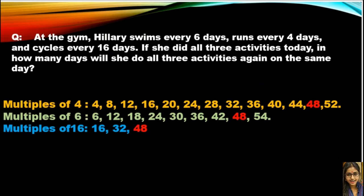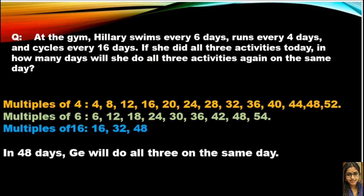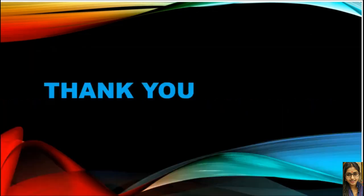Here we got one common multiple that is 48 in all three: 4, 6, and 16. Children, we can say that in 48 days she will do all three activities on the same day. I think children this is clear to you. Thank you.